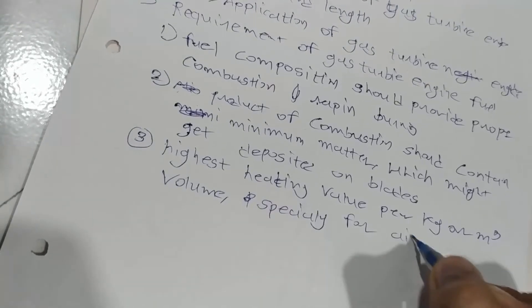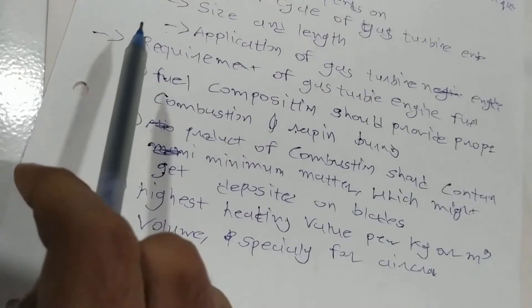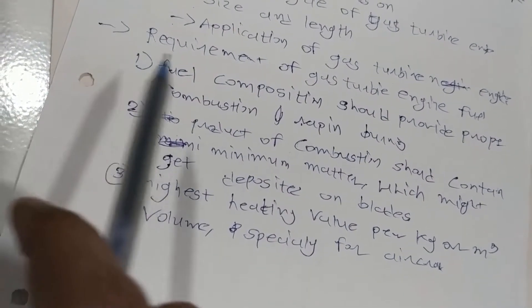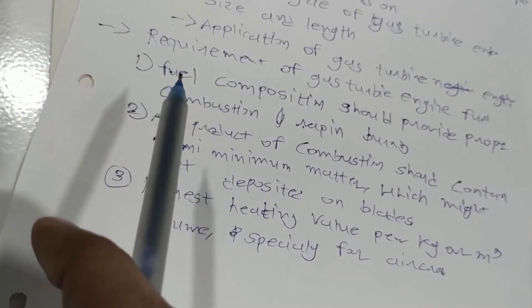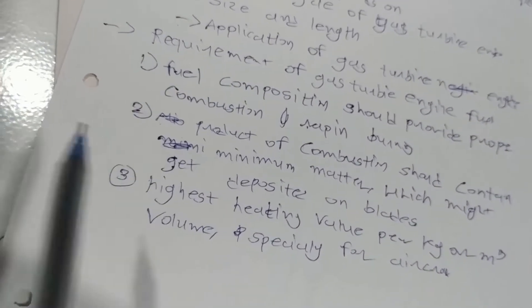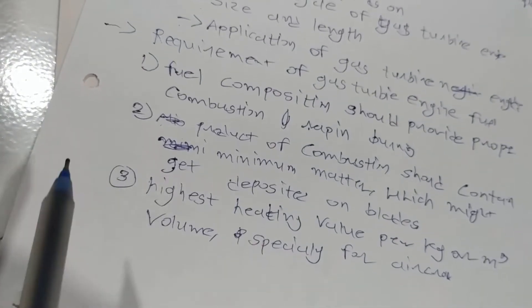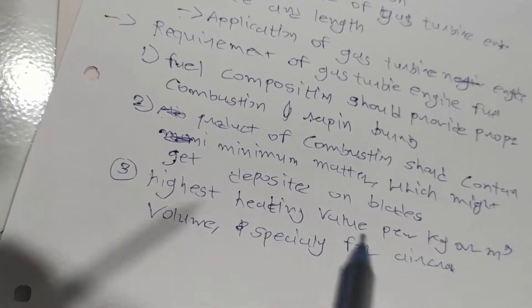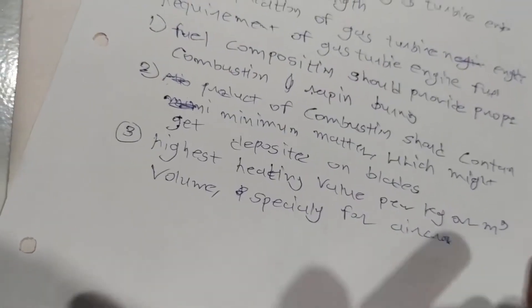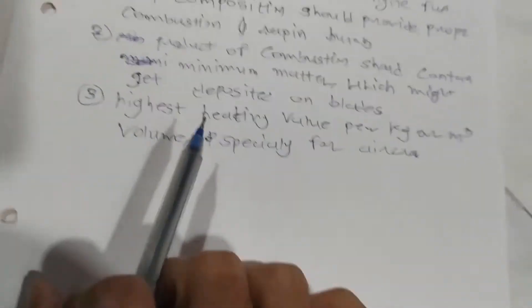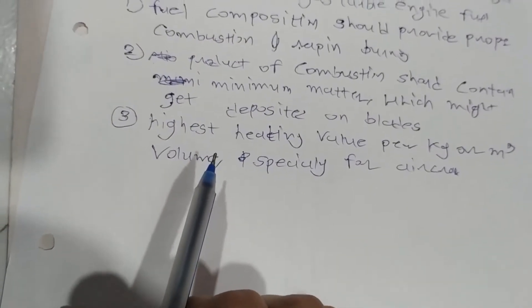Highest heating value per kg or per meter cube of volume is especially important for aircraft. So these three things are the requirements of gas turbine fuels: it should provide proper combustion and burn rapidly, the combustion products should not deposit on blades, and it should have the highest heating value, particularly for aircraft engines.